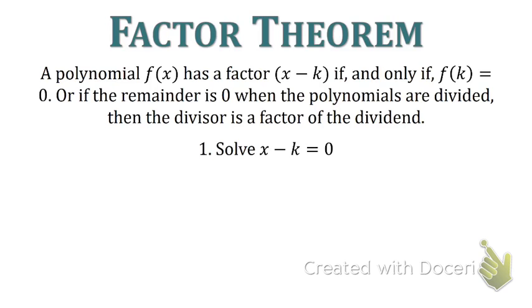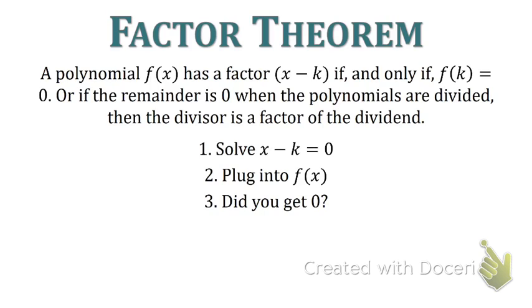We're going to learn another way to do this. First, we have to solve x minus k equals 0. Then we're going to plug our x into the function — whatever x equals, we take that number and plug it into the function. Then we see: did we get 0? If we did, then that number was a factor, so x minus k was a factor. If we don't get 0, then it's not a factor.